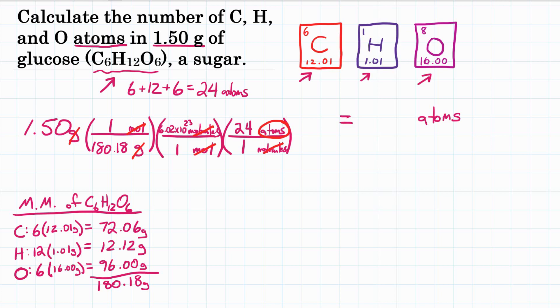Let's do the math in our calculator. It's going to be 1.50 times the top here. Let's divide by the bottom, divided by 180.18. Second conversion factor, we're going to multiply by Avogadro's number, 6.02 times 10 to the 23rd. We're going to go to the third conversion factor, multiply by the top, which is 24.